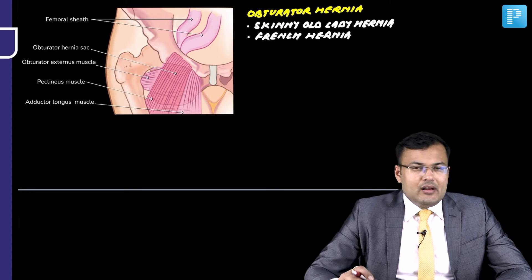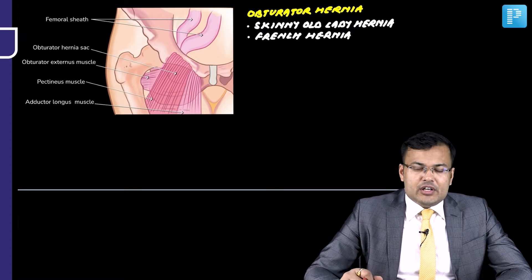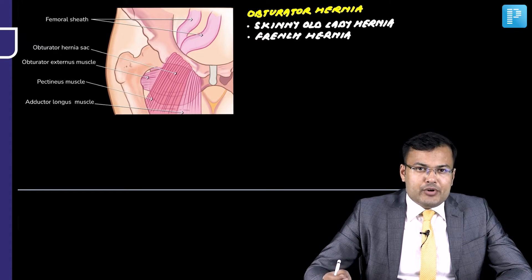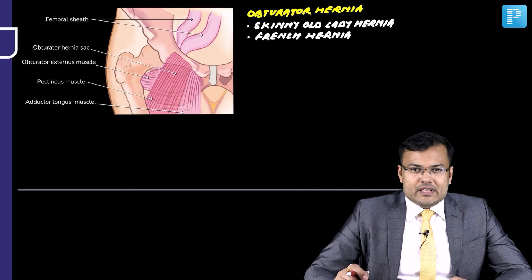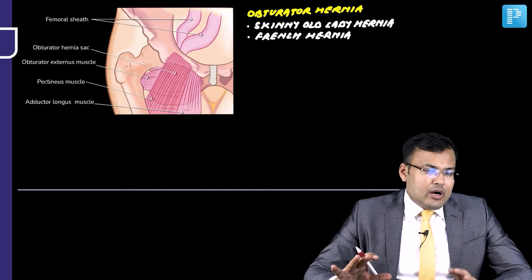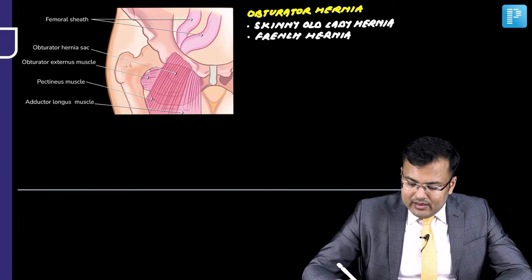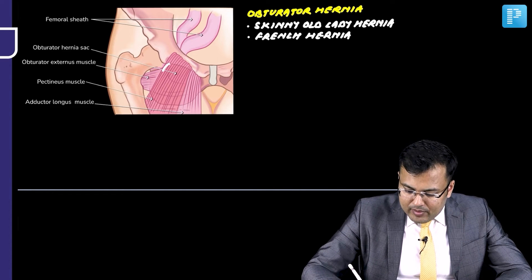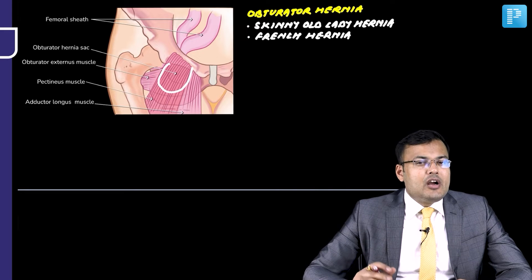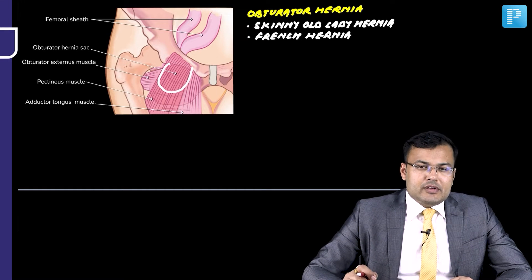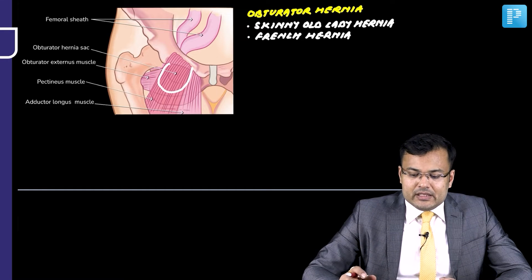There is an obturator canal. What is the content of the obturator canal? The contents are obturator nerves and vessels, along with fat.